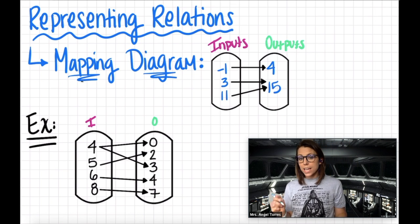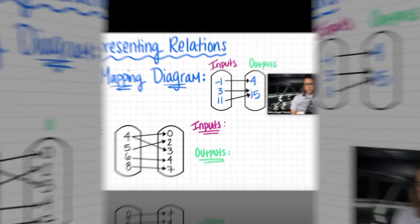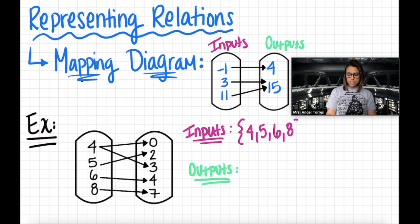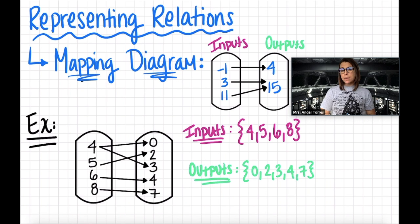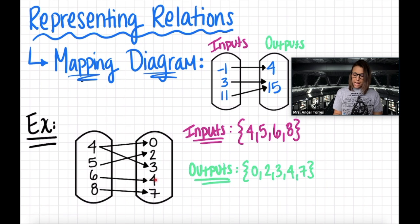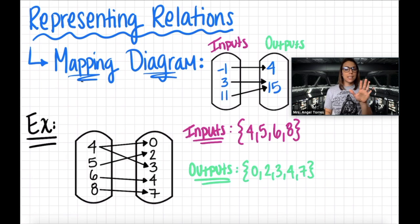Can you list all the inputs and outputs of this relation? This should be pretty easy, because your inputs are already listed in order from least to greatest on the left, and your outputs are already listed from least to greatest on the right. The hardest part about reading a mapping diagram is figuring out which input matches to each output. Looking at our example, 4 maps to 0 and also to 3, so 4 has two different outputs: 0 and 3. Five maps to 2, six maps to 4, and eight maps to 7. Even though you see a bunch of numbers in both bubbles, this represents a set of five ordered pairs.